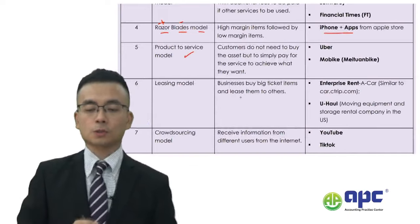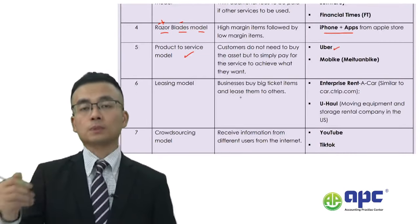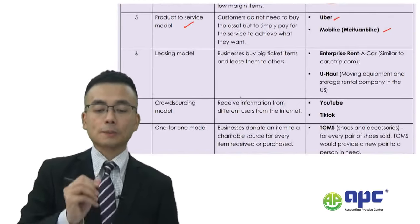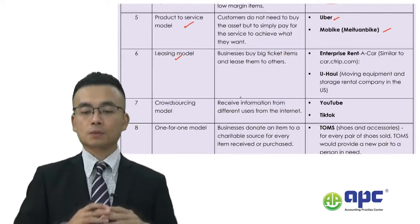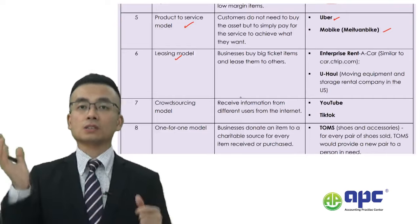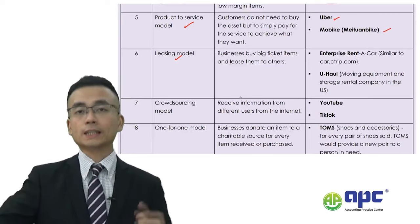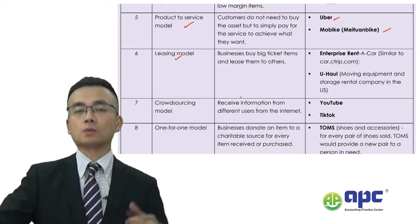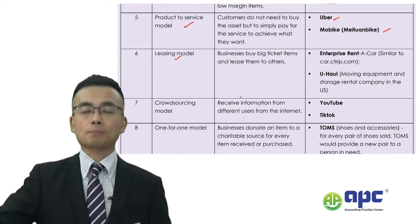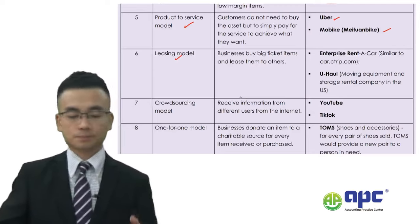Another business model is the product-to-service model — you do not have to buy the asset; you simply enjoy the service. For example, you enjoy services from the Uber platform or a mobile bike company. Another business model is the leasing model — for businesses that don't buy, for example, a photocopier machine. They simply lease it and pay a monthly fee. If the photocopier machine is not working, the lessor will deal with that. The business leasing that particular machine can typically print unlimited amounts of paper each month.